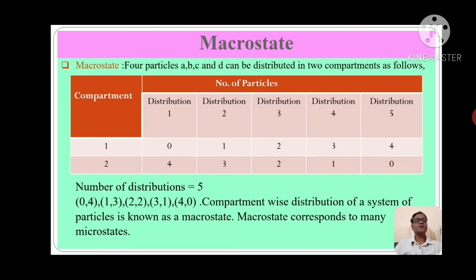So the distribution of a system of particles, shown as (0,4), (1,3), (2,2), (3,1), and (4,0), is known as macrostate. Each macrostate corresponds to many microstates.